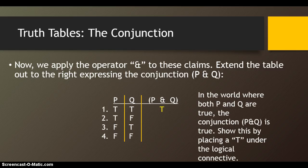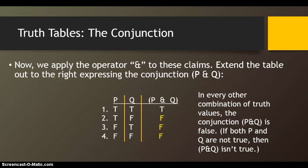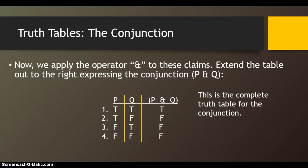In the world where both P and Q are true, the conjunction P and Q is true. You can show this by placing a T under the logical connective. This is fairly intuitive: if it's true that I'm looking at a computer AND it's true that I'm drinking coffee, then it's true that I'm looking at a computer AND drinking coffee. But in every other combination, the conjunction is false. If it's false that I'm drinking coffee, then it's false that I'm looking at a computer AND drinking coffee. This is the complete truth table for the conjunction.